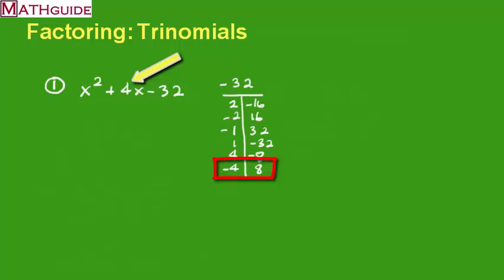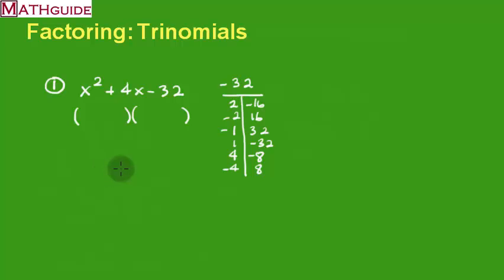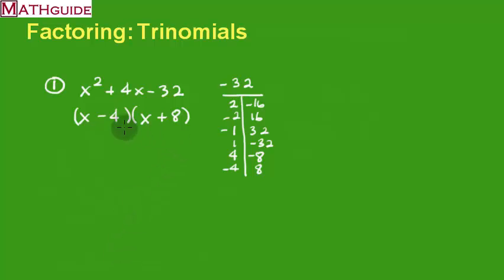That's where I go with my solution. We write it as two binomial factors: x times x gives x squared, and we use the winning combination of negative 4 and positive 8. So the factors are (x minus 4)(x plus 8). When I multiply these two binomials together, I get back this trinomial.